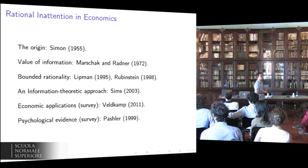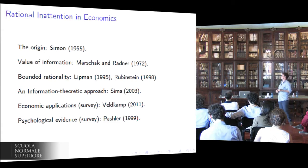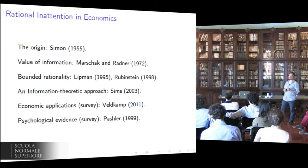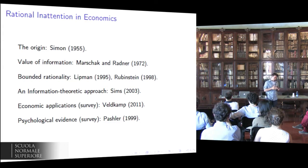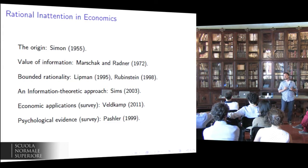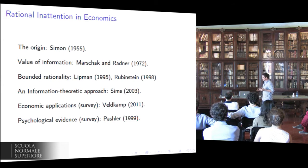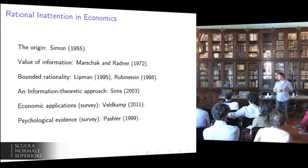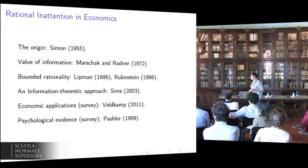For instance, in the context of macroeconomics, think of an economy populated by rationally inattentive agents. If there is a shock to the economy, the agents, being rationally inattentive, imperfectly, partially observe the shock. As a consequence, they imperfectly, smoothly react to it. And therefore macroeconomic variables sluggishly respond to the shock, which is what we see in the data.